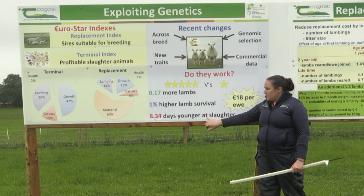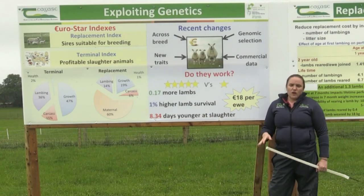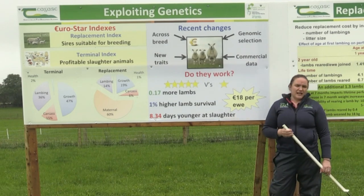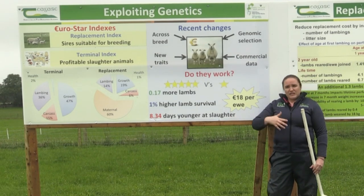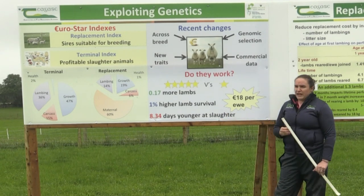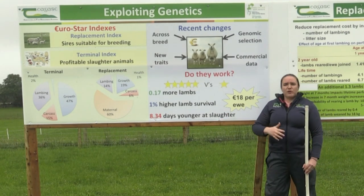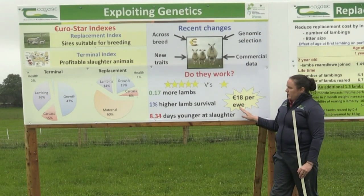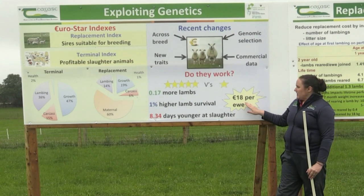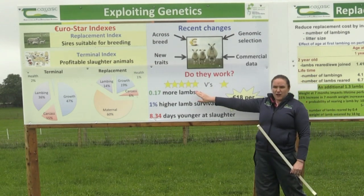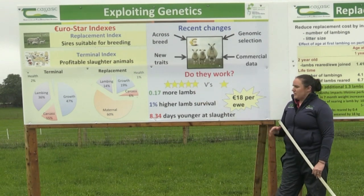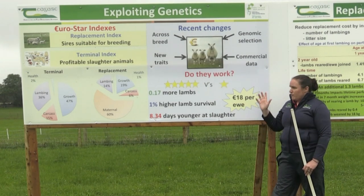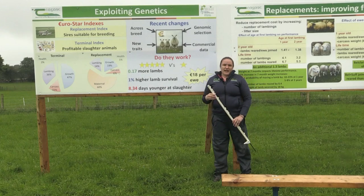The other big difference was days to slaughter: we saw an 8.3-day difference, meaning you're getting your lambs away to slaughter at an earlier age — great for profitability but also for environmental sustainability. Overall, this difference translated to an €18 difference per ewe per year in five-star animals compared to one-star animals. So there are big gains to be made from using our indexes.